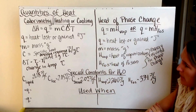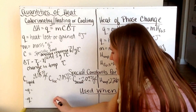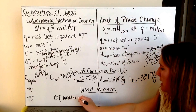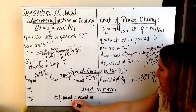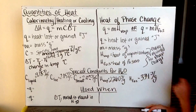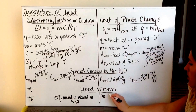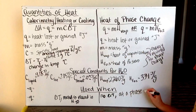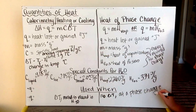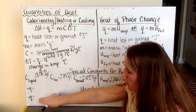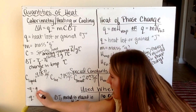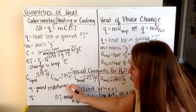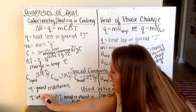These two equations are used at different times. Our calorimetry equation is used when we have a change in temperature or when a metal is placed in water. Our heat of phase change equation is used when we have no change in temperature or when we are at a phase change. For both, Q can be positive or negative: a positive Q is heat gained and is endothermic, and a negative Q is heat lost and is exothermic.